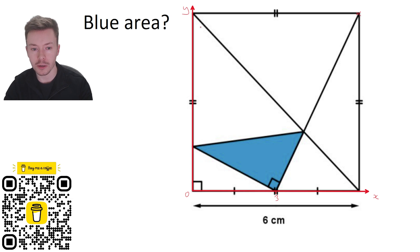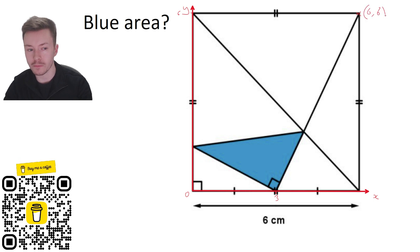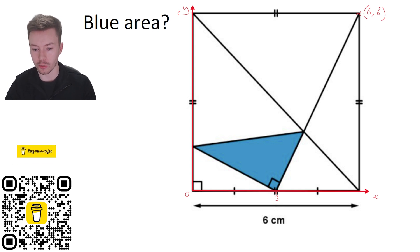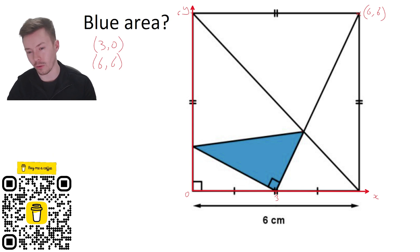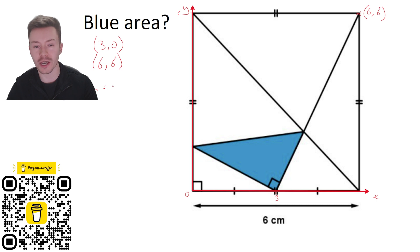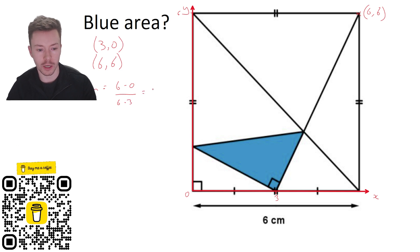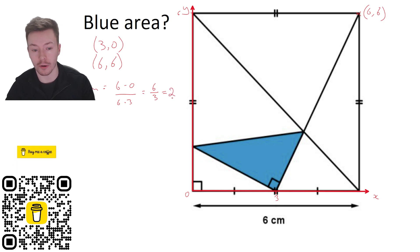I know that this point up here, because the square is six, this must be six, six. Now I've got a straight line that goes through at (3, 0) and (6, 6). I can then use that to work out the gradient of the line and the equation of that line, which will be useful later. The gradient is change in y over change in x, so six take away zero over six take away three — that's six over three, which gives me a gradient of two.